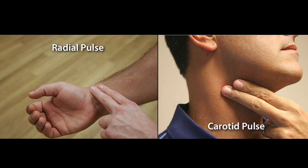Personal trainers primarily use the radial pulse in the lower arm and the carotid pulse at the neck, as shown here. Protocol for taking a resting measurement or during training will be described in detail in a later lesson.